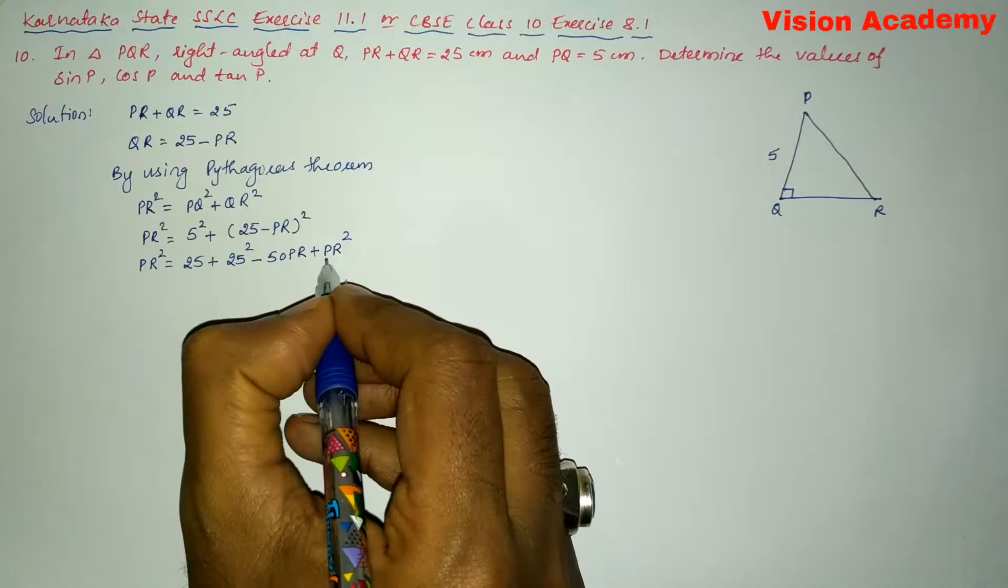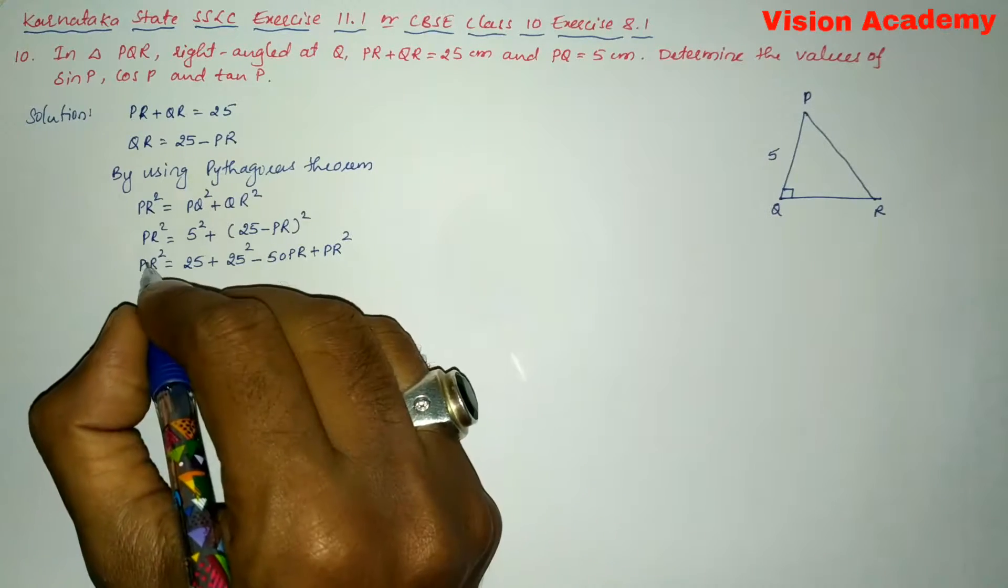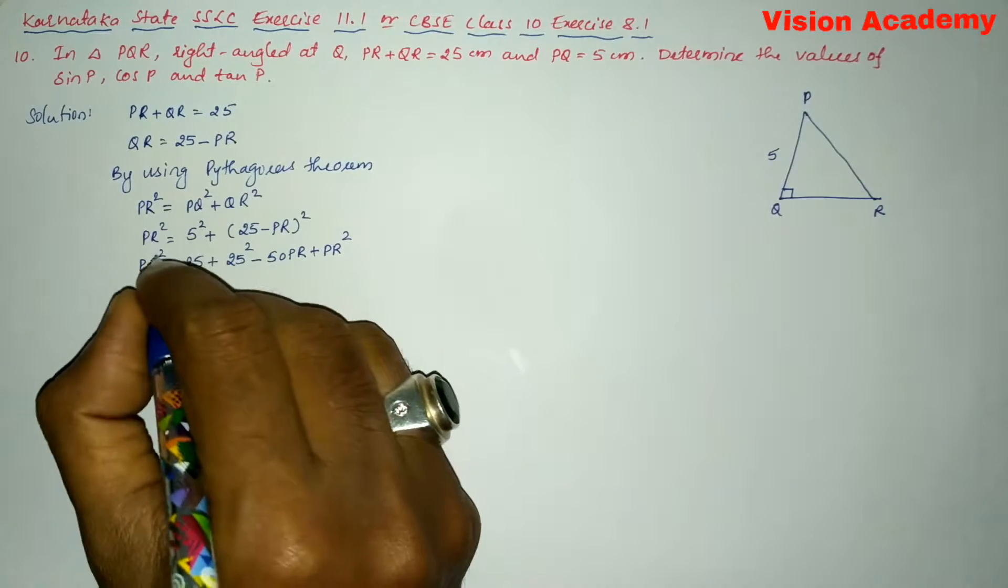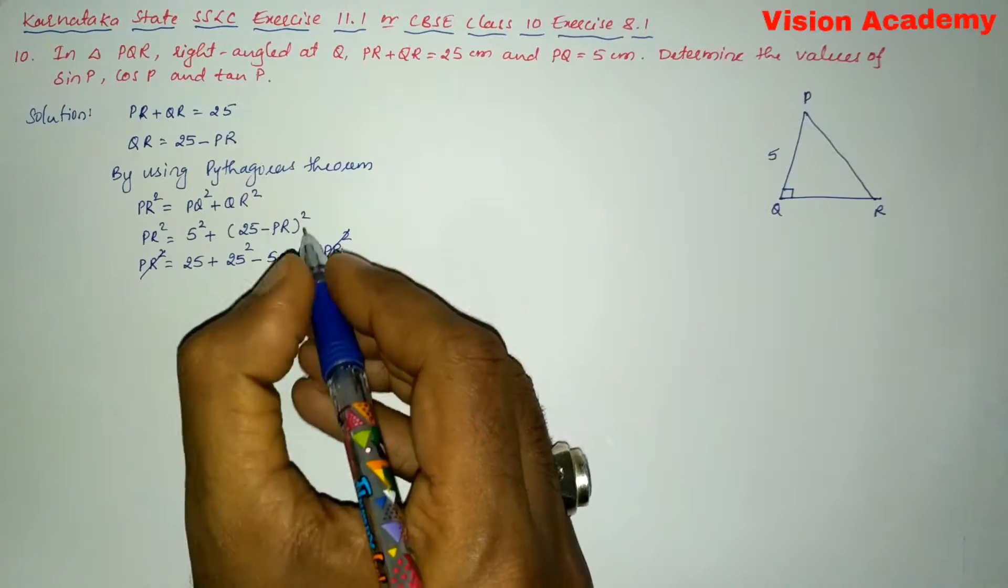Now, here you can see this PR square if I transform this side, so it will become minus PR square. So PR square PR square will get cancelled. So let us cancel these two.